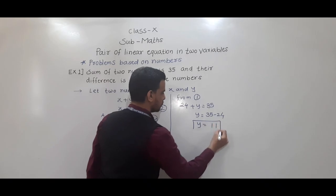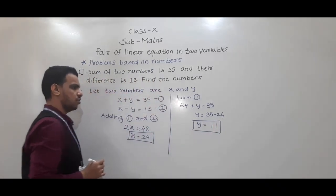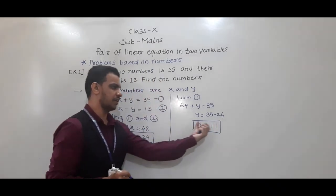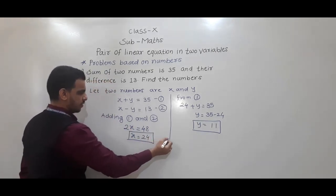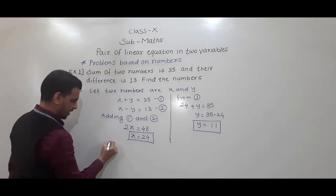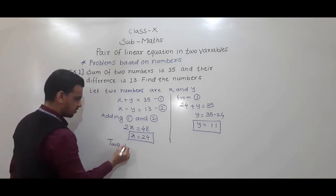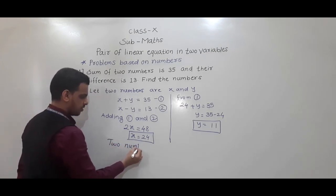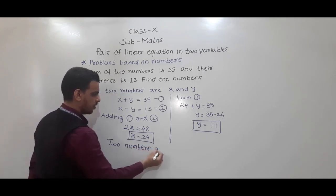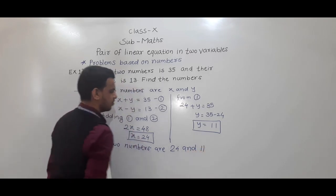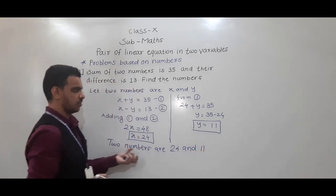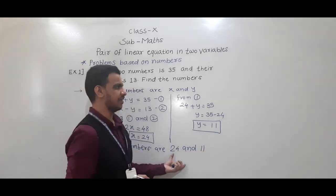So y is equal to 35 minus 24, that is 11. Therefore y equals 11. So the two numbers are 24 and 11. And one important thing — when you have a problem, always write the final answer clearly: the two numbers are 24 and 11.